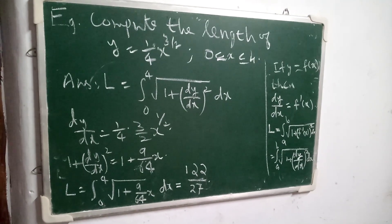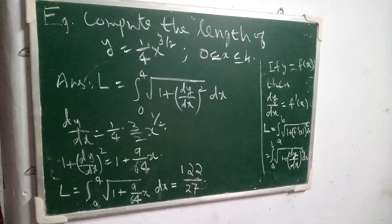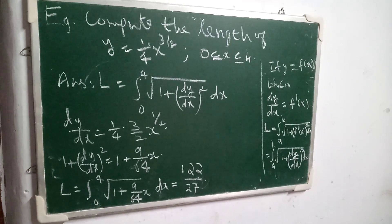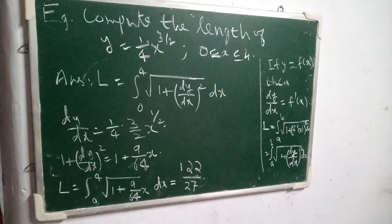The length formula becomes L is equal to integral a to b square root of 1 plus, instead of f dash x whole square, it becomes dy by dx the whole square dx.